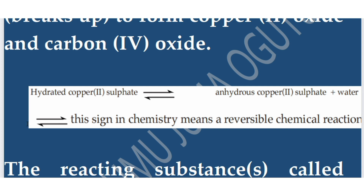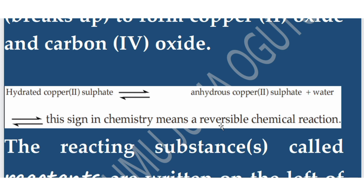We can also have a reversible reaction: hydrated copper(II) sulfate, when heated, forms anhydrous copper(II) sulfate and water. The double arrows facing opposite directions indicate a reversible reaction — meaning when water is added to anhydrous copper(II) sulfate, it reforms hydrated copper(II) sulfate.